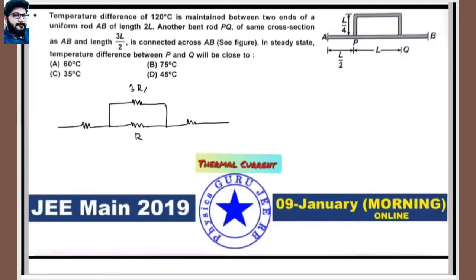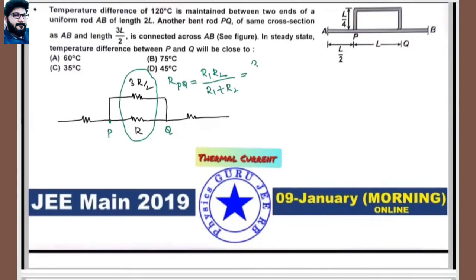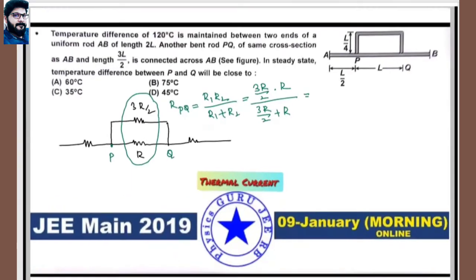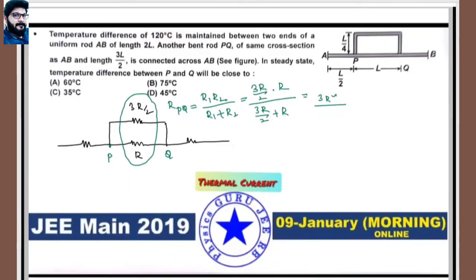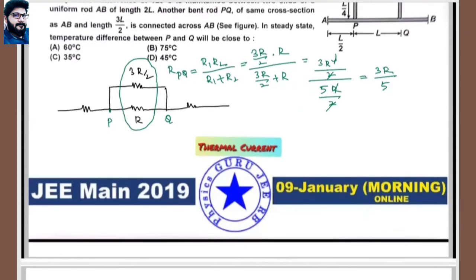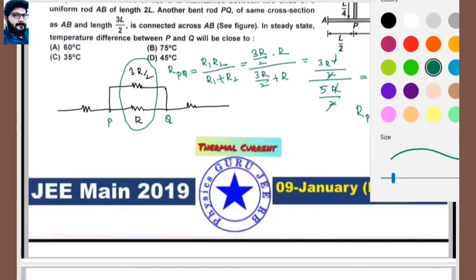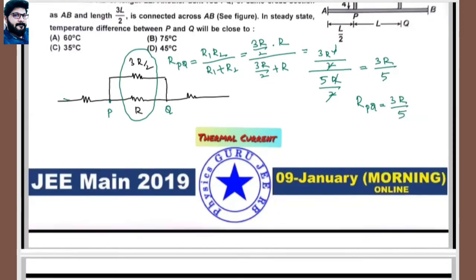Resistance across P and Q: R_PQ = (R × 3R/2) / (R + 3R/2) = (3R²/2) / (5R/2) = 3R/5. So effective resistance between P and Q is 3R/5.